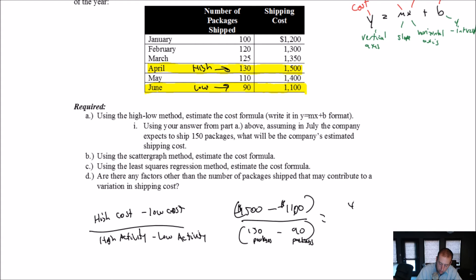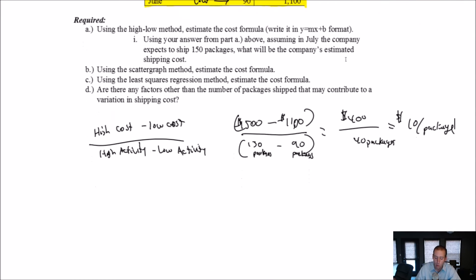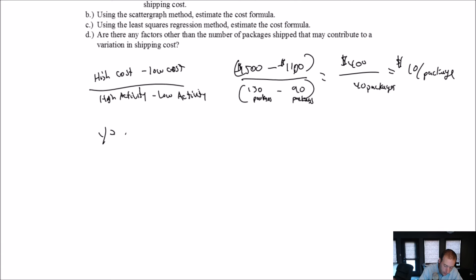$1,500 minus $1,100 is $400. 130 minus 90 is 40 packages. $400 divided by 40 packages. My cost here is $10 per package. Okay. So what have we just done? What have we just computed? Well, remember, we're trying to solve for this Y equals MX plus B formula for a line. We have just solved for M. So we know our M. Now it's Y equals 10X plus B.